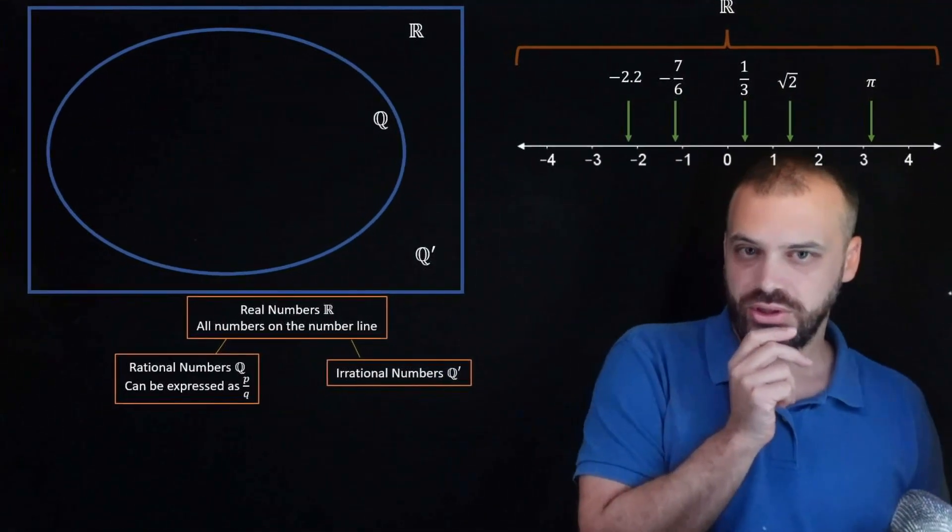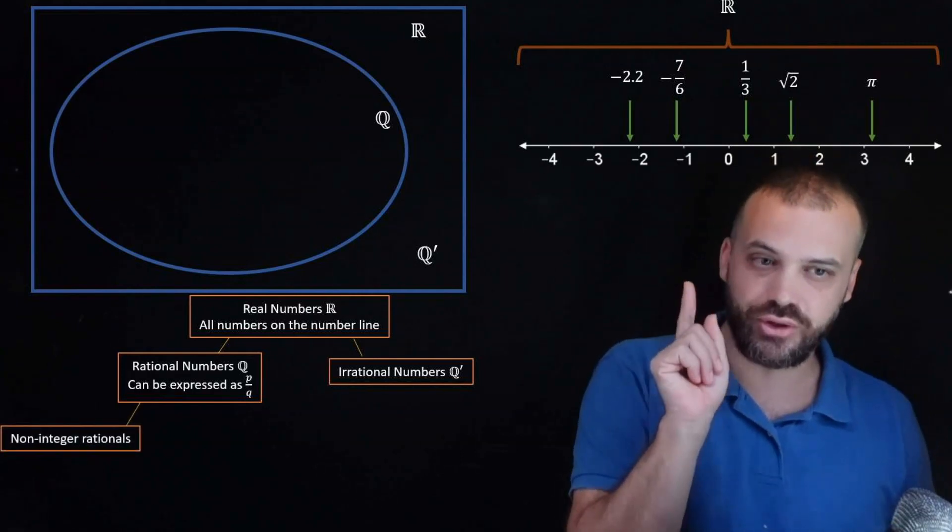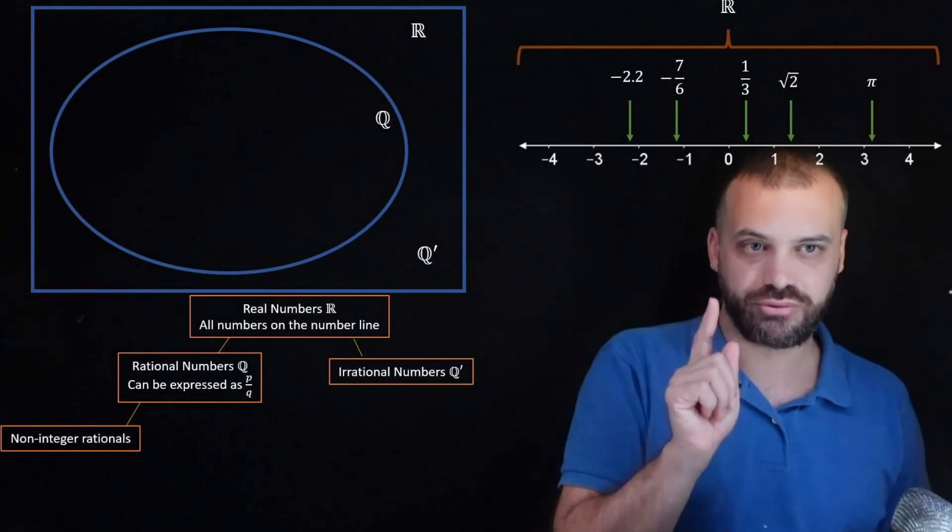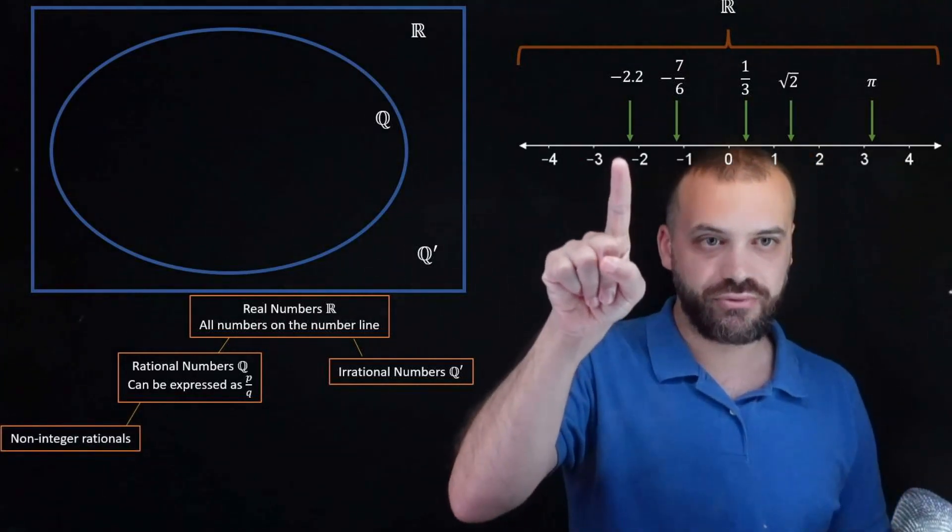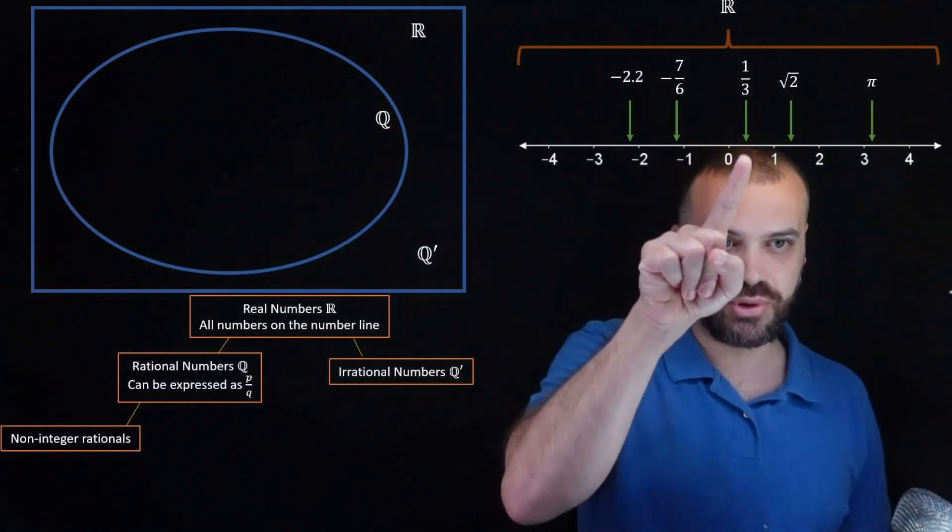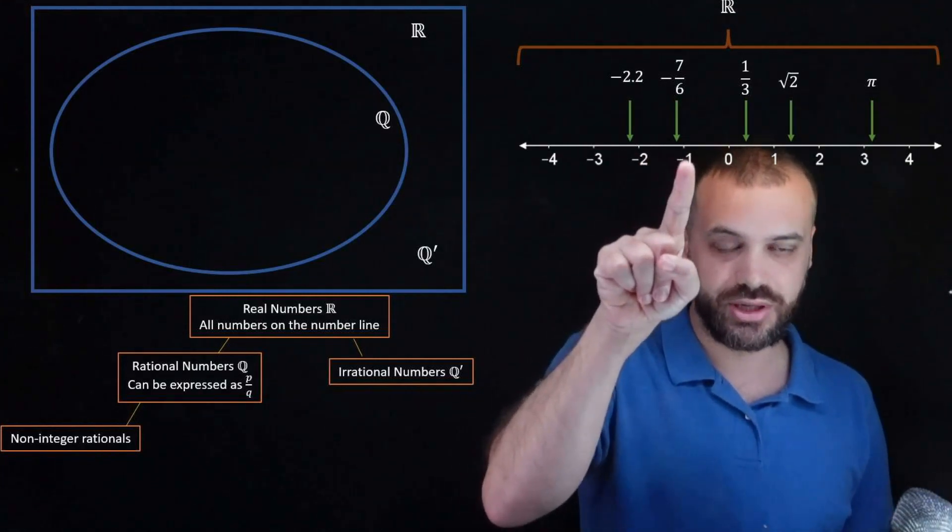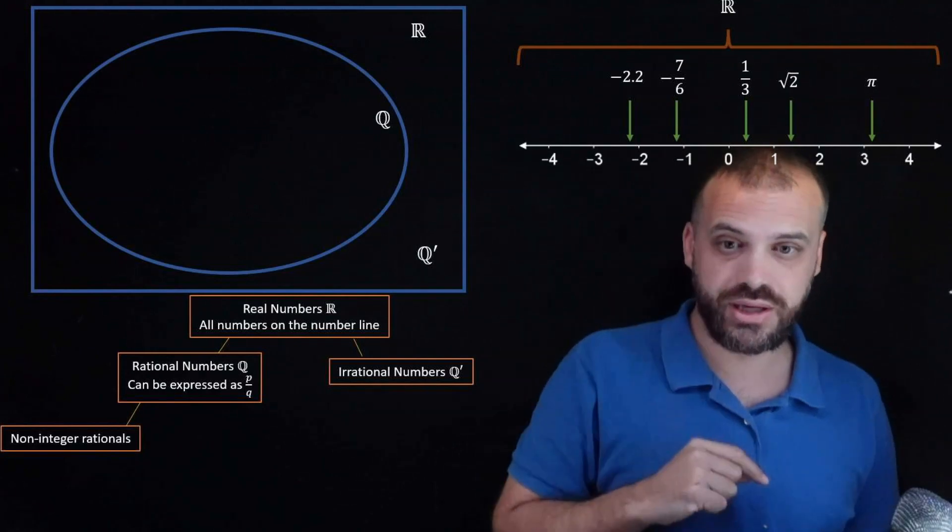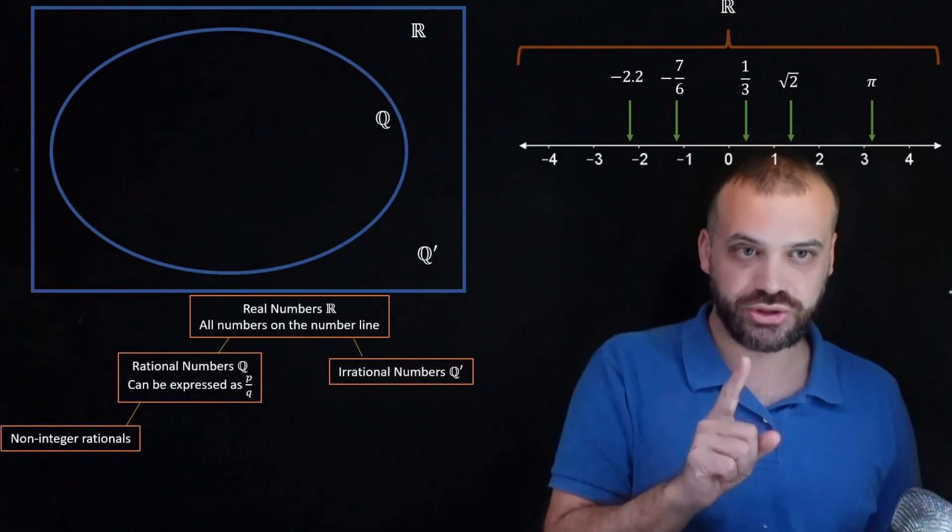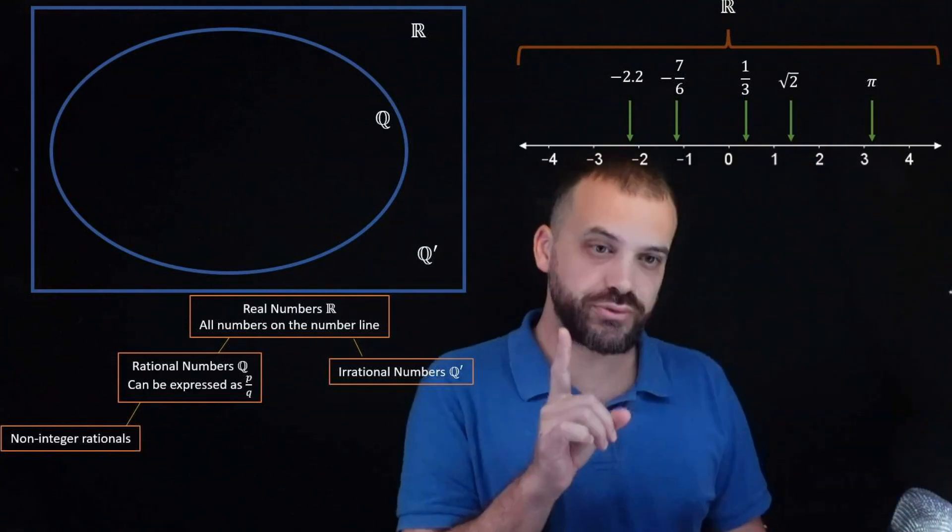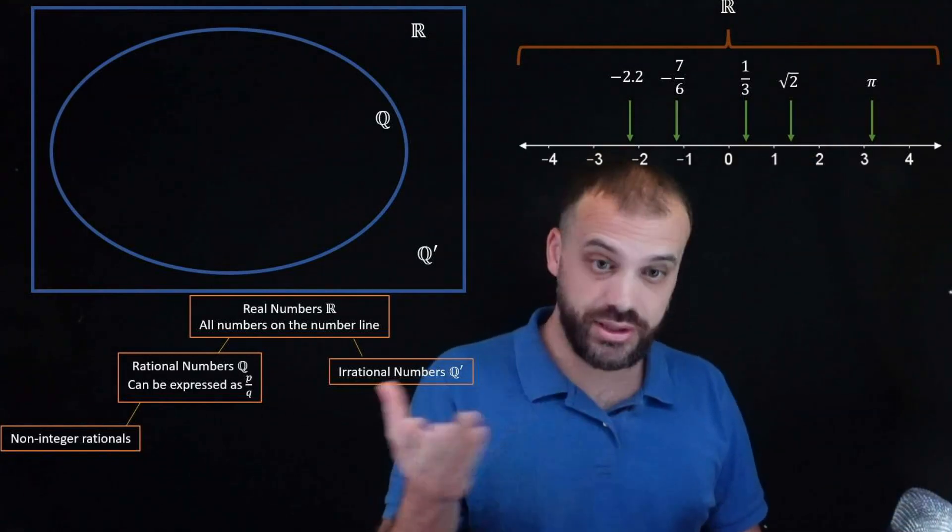Okay, what else do we have? We have the non-integer rationals. So every one of these that I've put up already, negative 2.2, negative 7 over 6, 1 over 3, they are non-integer rationals because they're not integers. So of course that brings us to the integers.